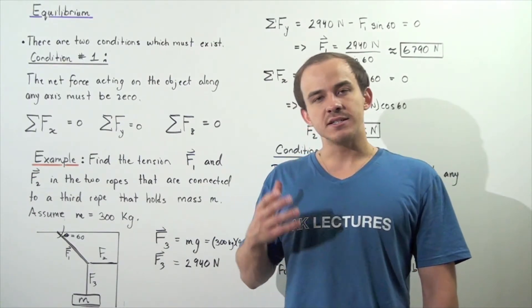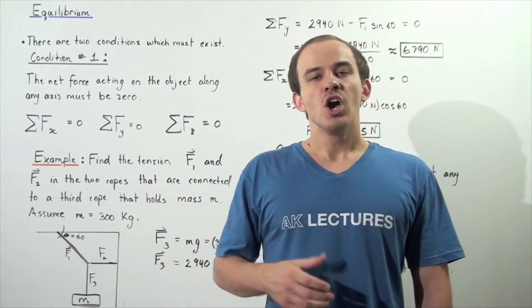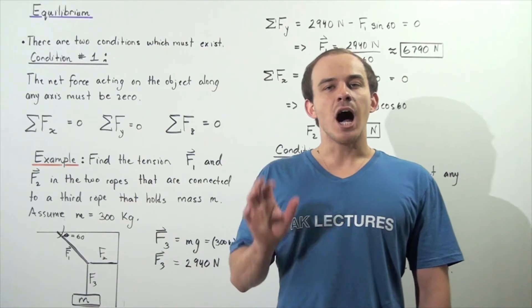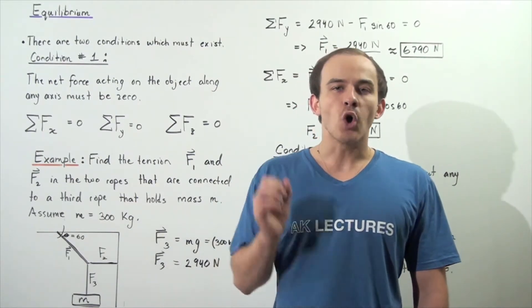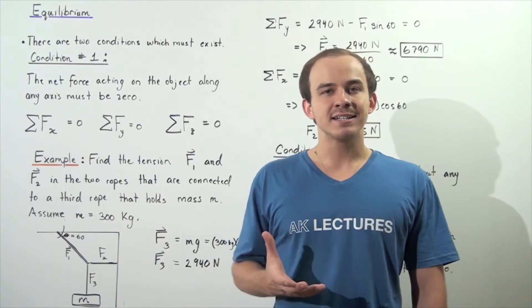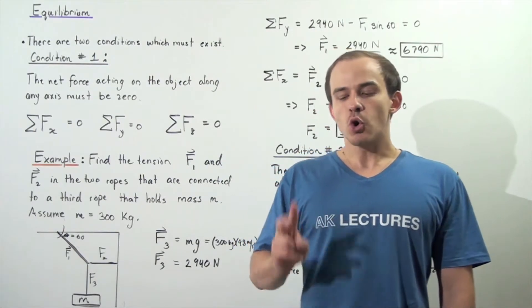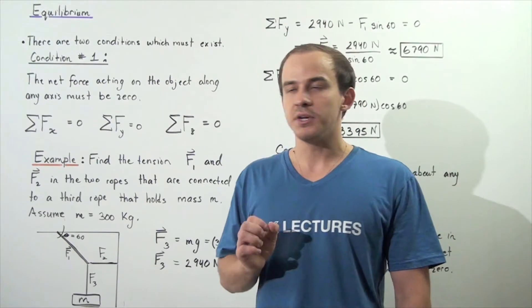Now what exactly does it mean for an object to be in static equilibrium? Whenever an object is in static equilibrium, that object is at rest. It's not moving along an axis and it's not rotating about any axis. The object is completely stationary.